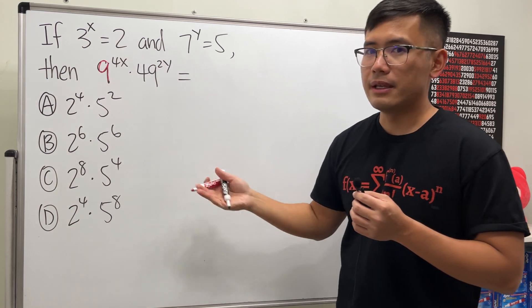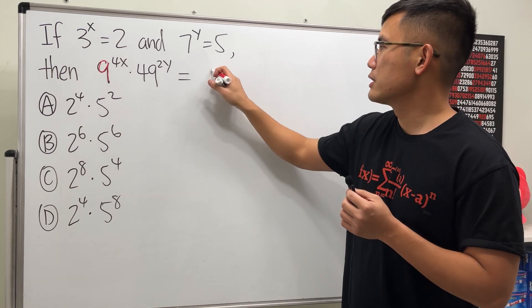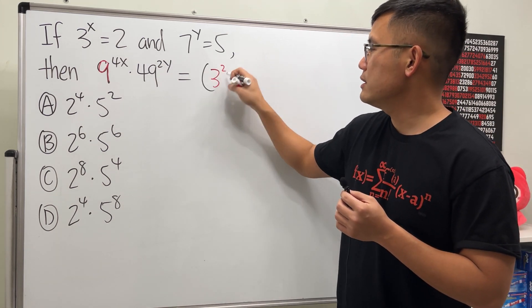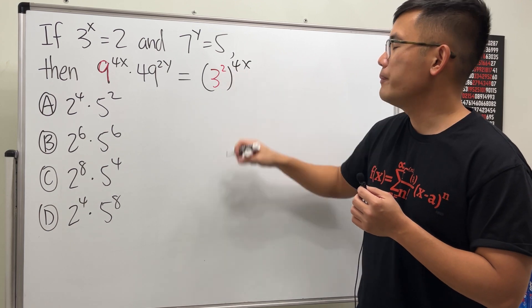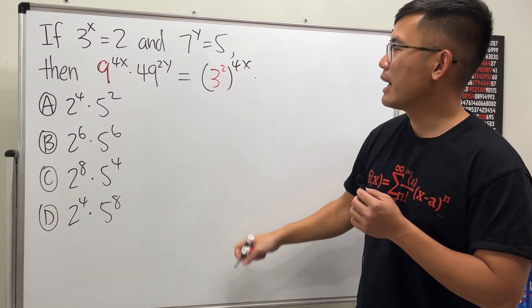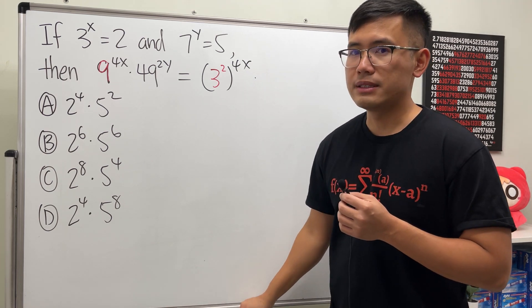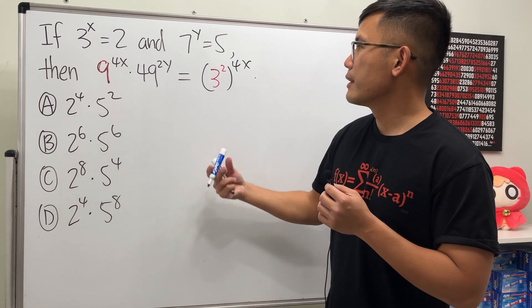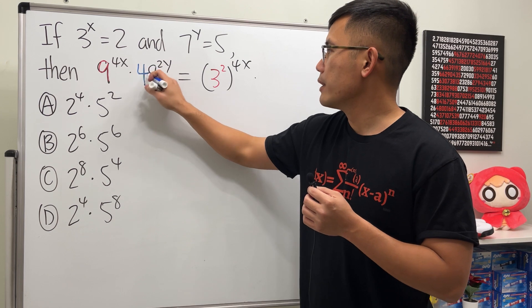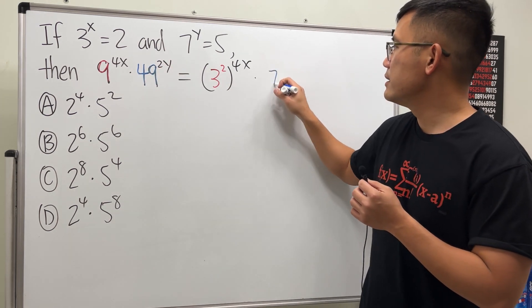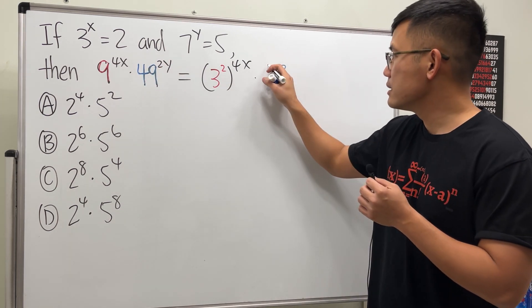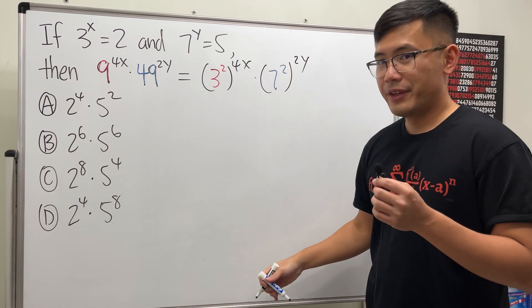If you look at the 9 right here, of course it's the same as 3 squared. So let's go ahead and write that down. We have this raised to the 4x power, and then we multiply this by likewise for the 49, it's the same as 7 squared. So again, let's do this, 7 squared raised to the 2y power.